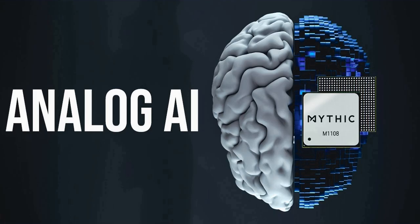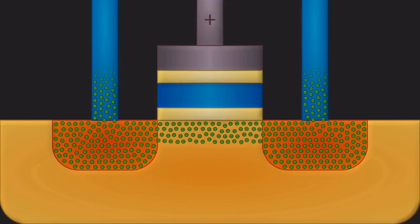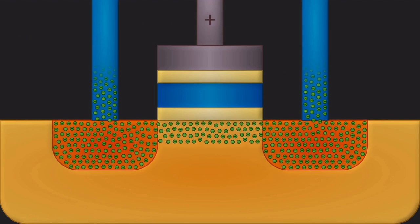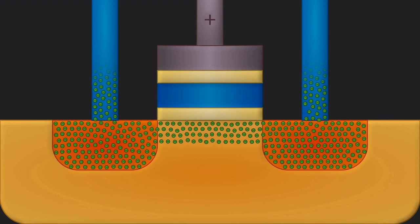Texas-based Mythic startup developed a new technology for AI applications using the old concept of analog chips processor. Mythic has repurposed digital flash storage cells. Normally these are used as memory to store either one or zero.